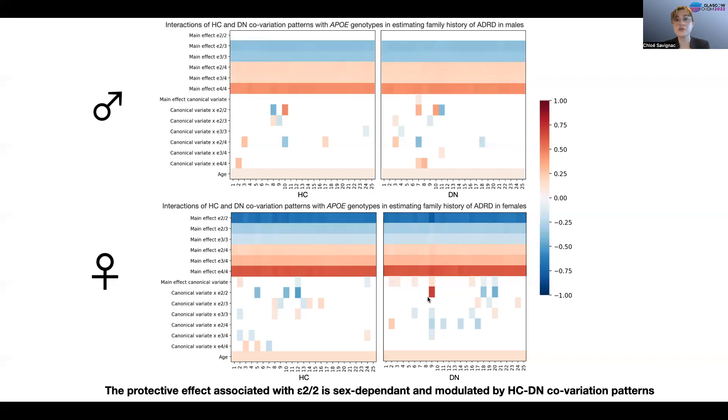So we have replicated known results such as this dosage effect in E2 and E4 that is sex specific, but we have also shown that the protectiveness of these genotypes is modulated by hippocampus default network covariation expression. We have conducted similar analyses,